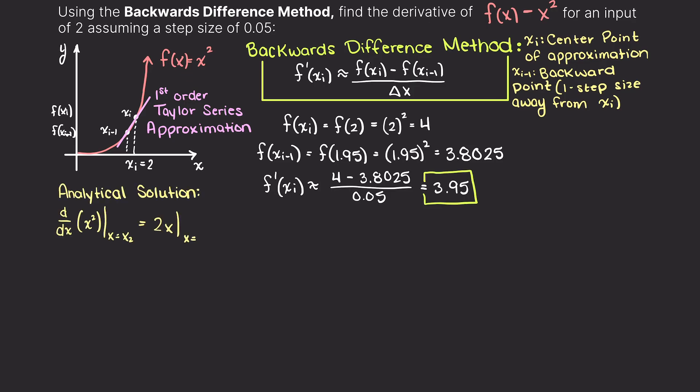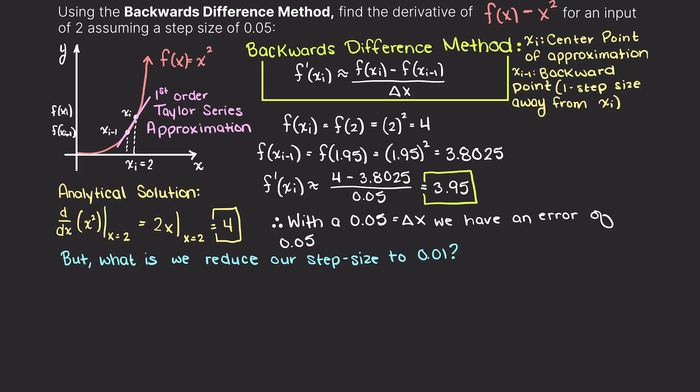As we learned in our last video, our error is going to be proportional to the step size that we take. Therefore, to reduce the amount of error that we get, let's try taking a smaller step size and see if our answer is more accurate.